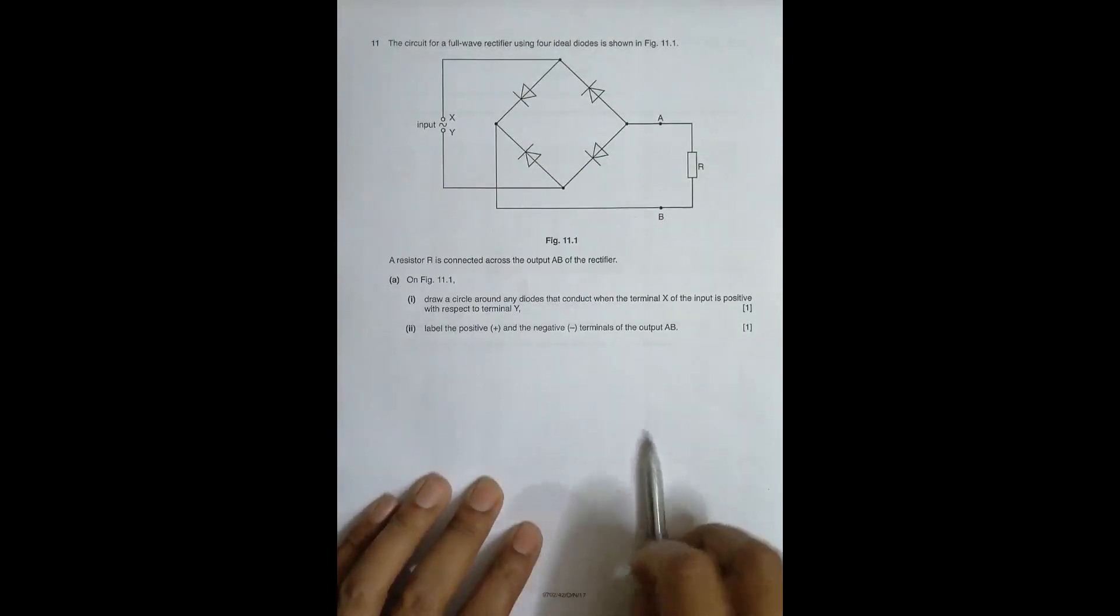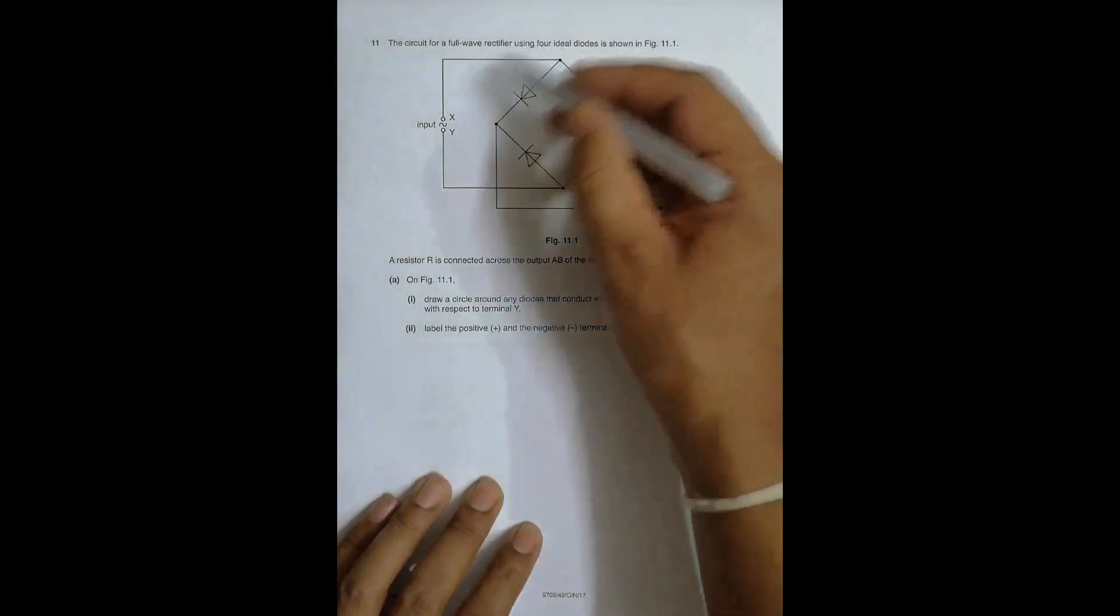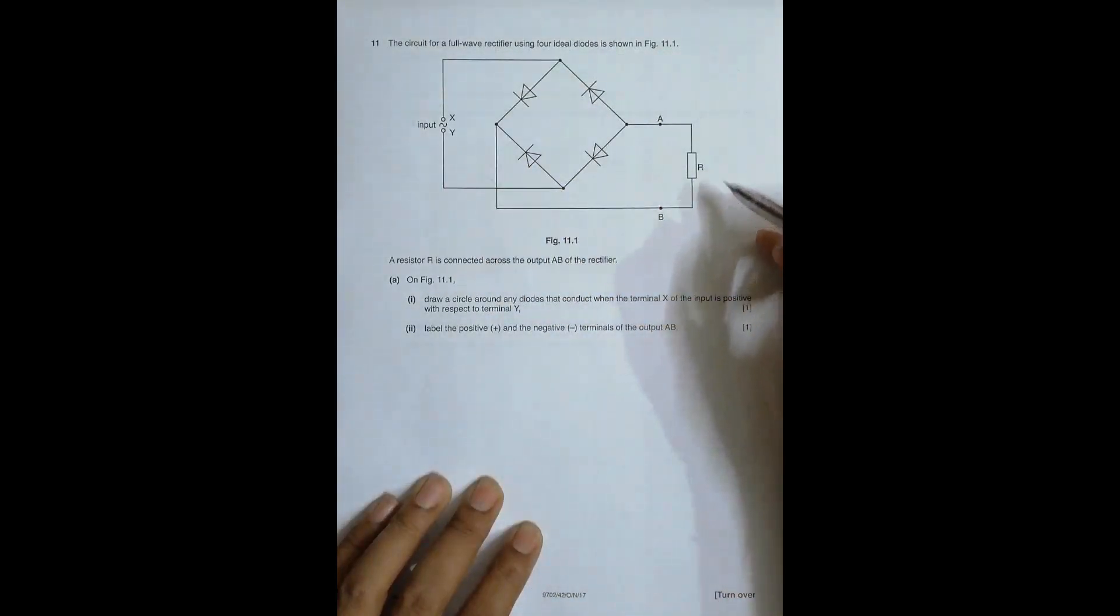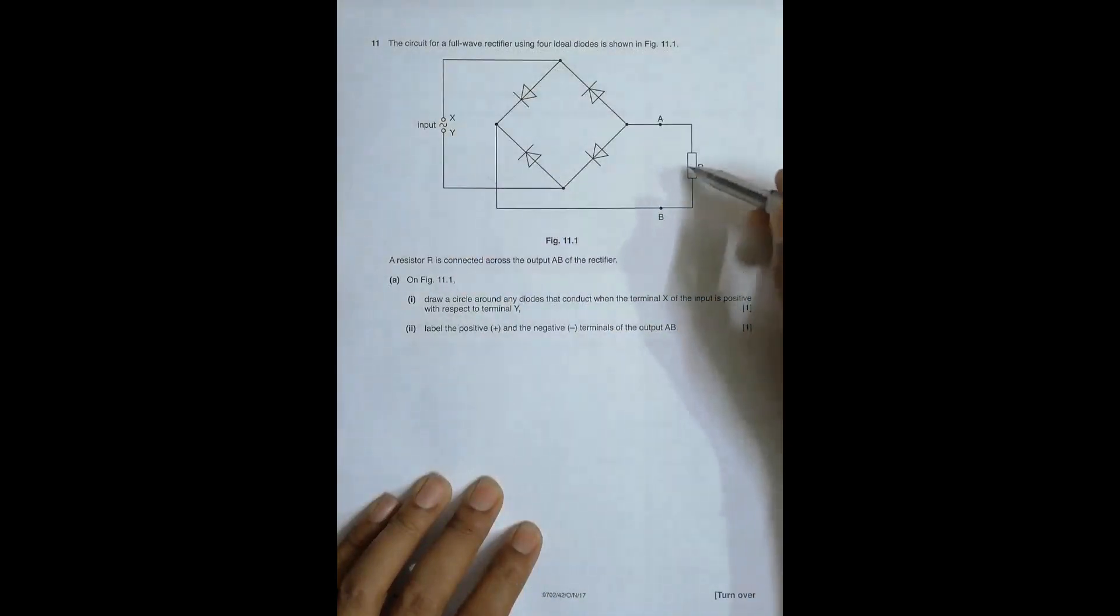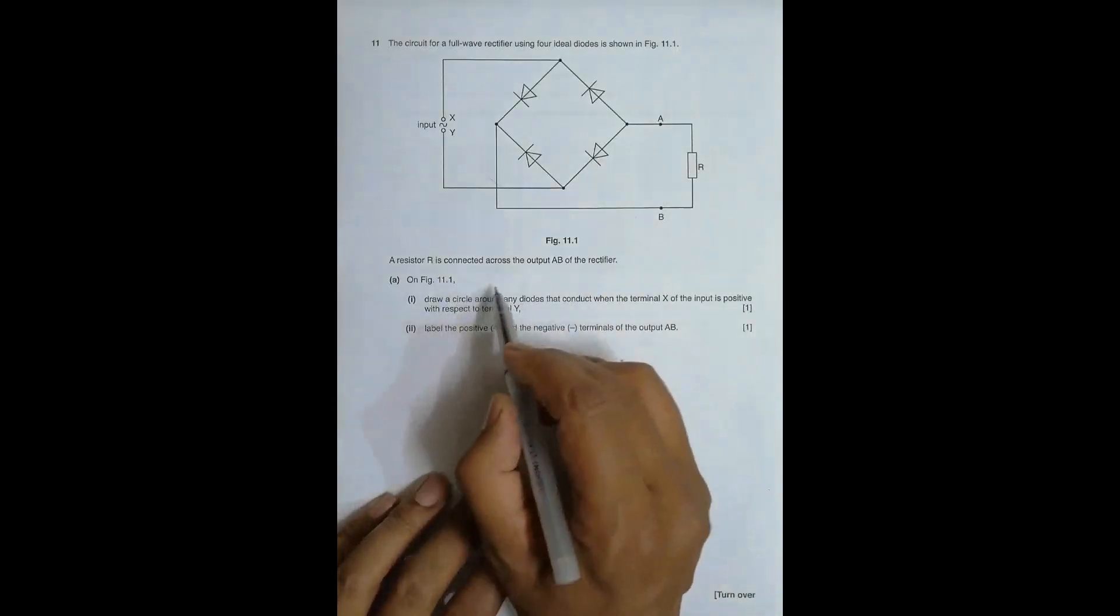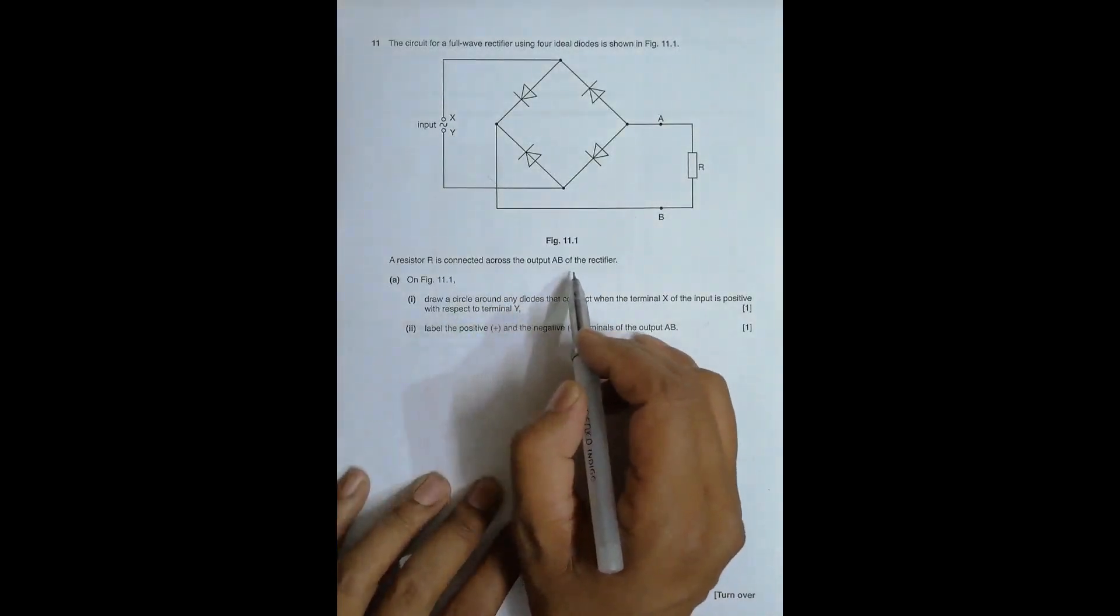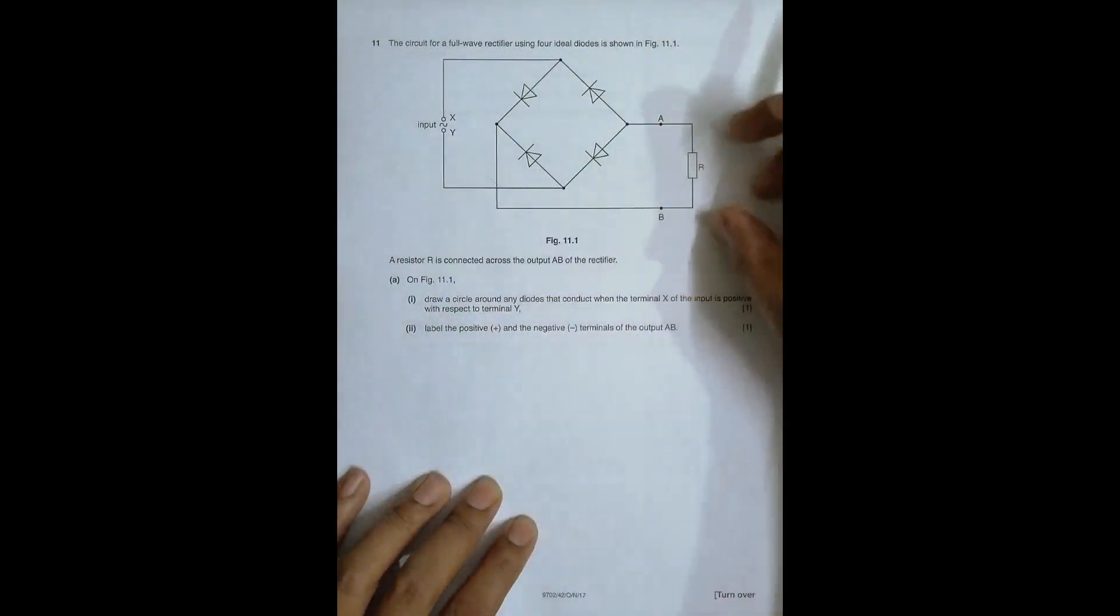The circuit for a full wave rectifier, this is a bridge type rectifier using four ideal diodes shown in figure 11.1. Four diodes, a source here, load here, two terminals shown AB. A resistor R is connected across the output AB of the rectifier, so resistor connected here.